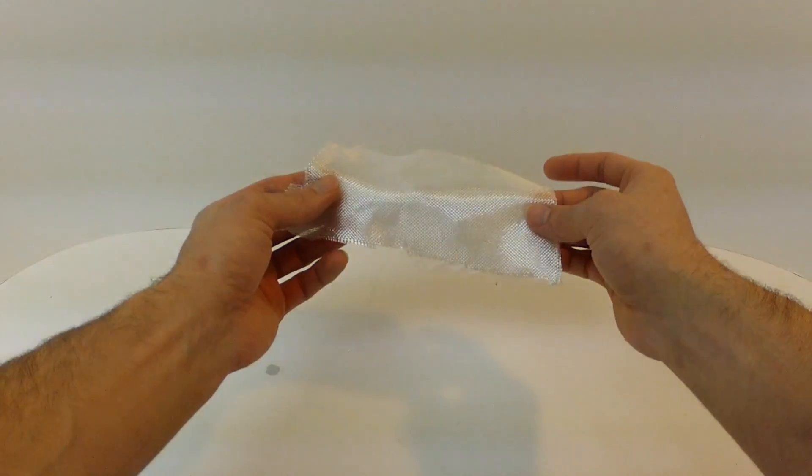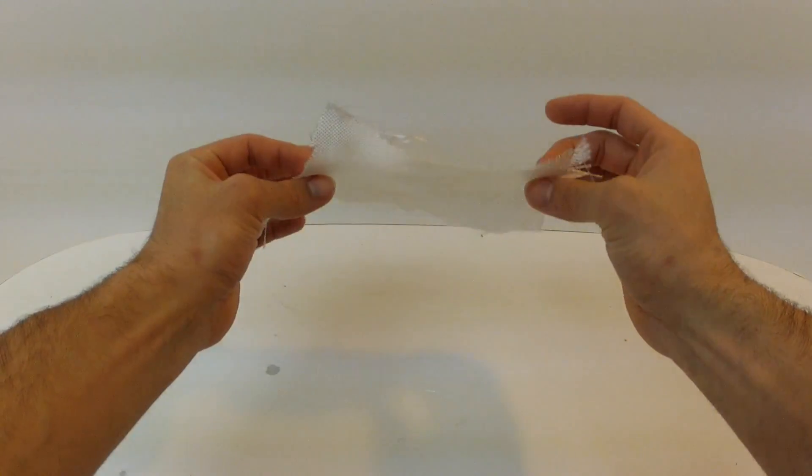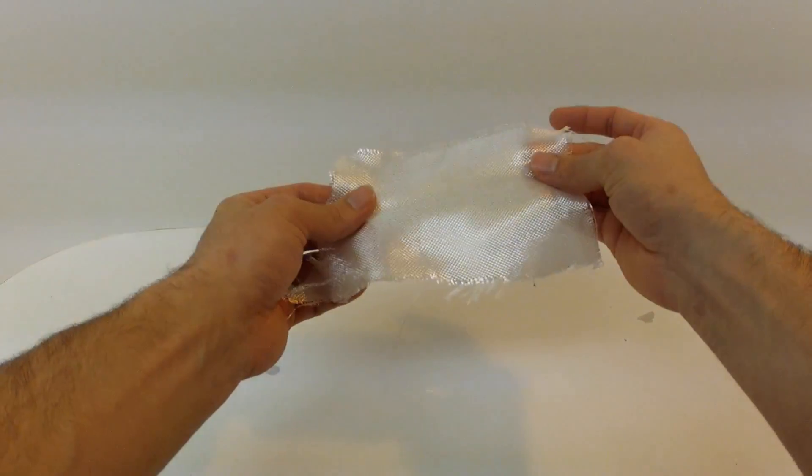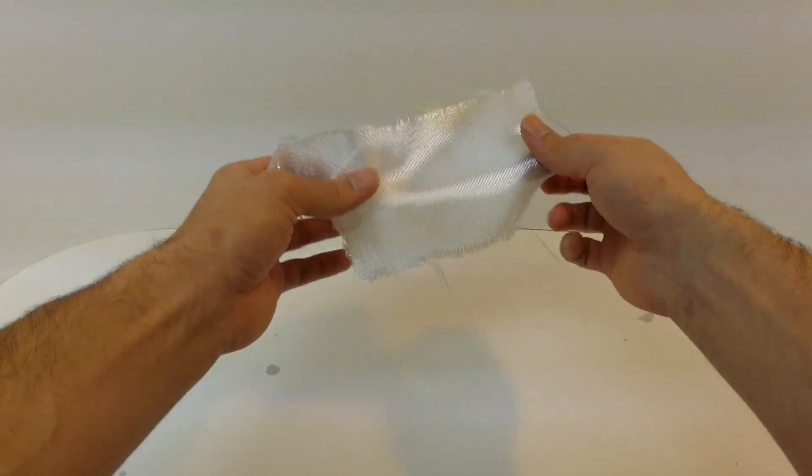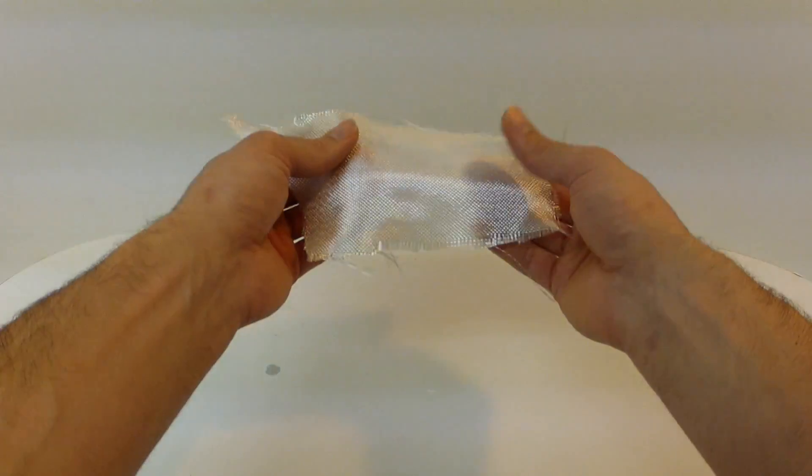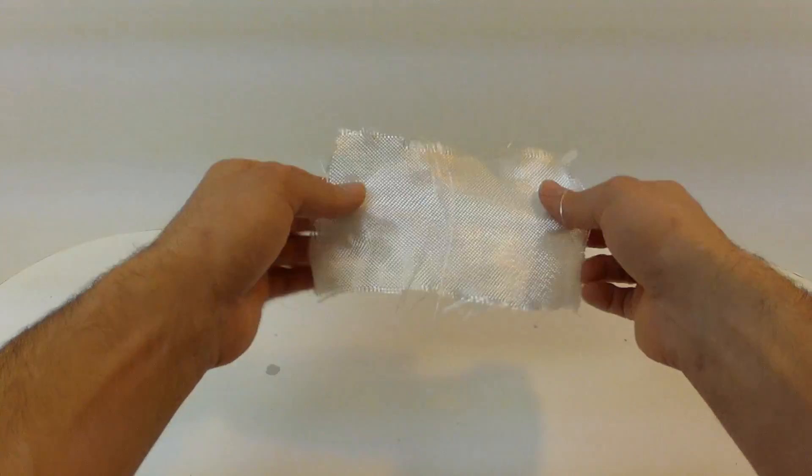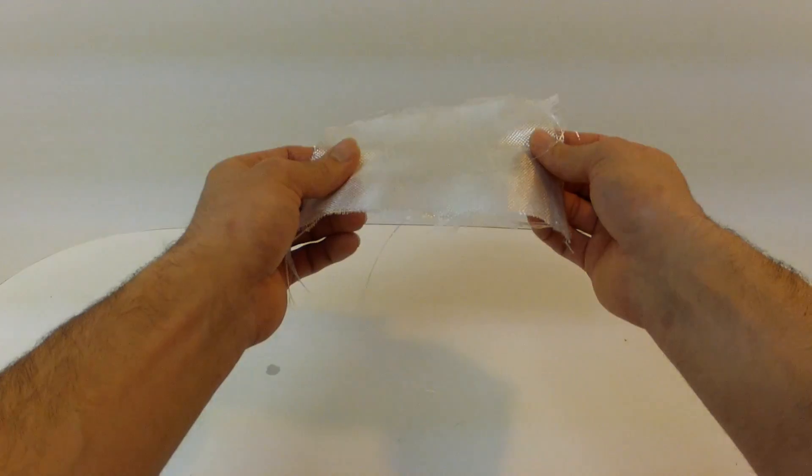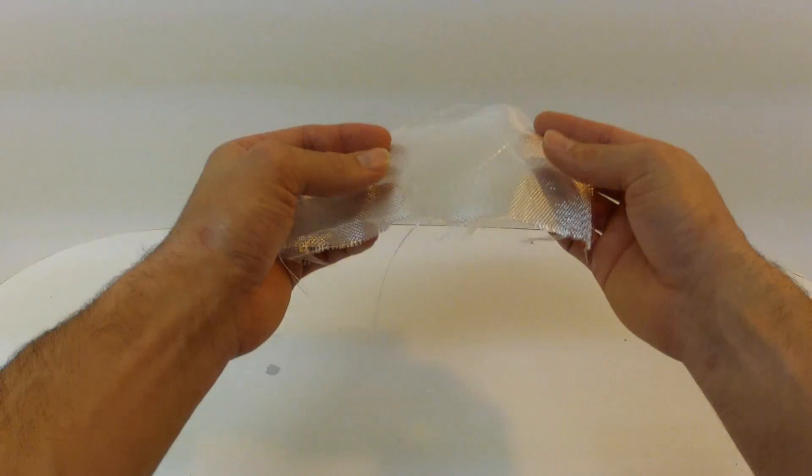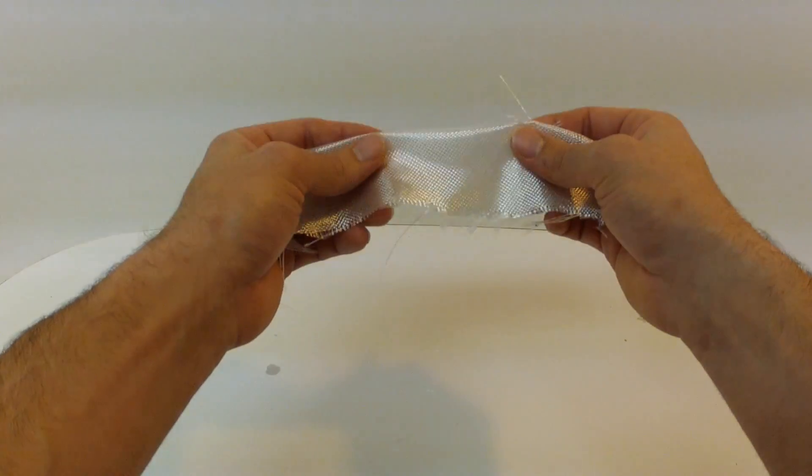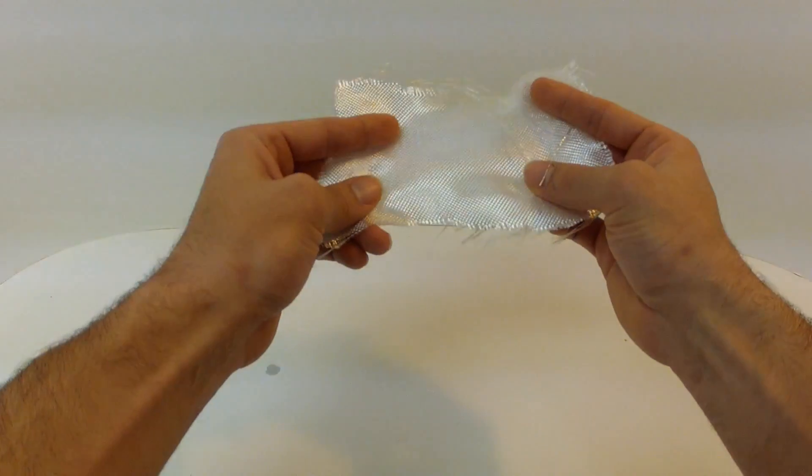So the glass I'm going to be using for this build is 3.7 ounce glass. I get this from Fiberglass Supply. This is commonly also known as 4 ounce glass but it's really 3.7 and I like to use this because it soaks through very easily and going around edges and curves, it's pretty flexible and it can bend and hold those curves pretty well.